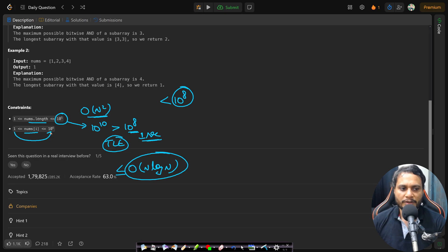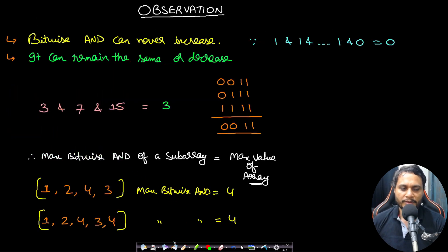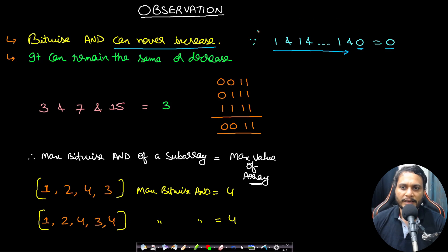Each number is in the range 1 to 10⁶, so all numbers are positive 32-bit integers. Key observation: the bitwise AND of numbers can never increase — it can only decrease or remain the same. No matter how many times you AND a 1, a single 0 makes the entire AND zero. So a set bit can become unset, but an unset bit can never become set using bitwise AND.